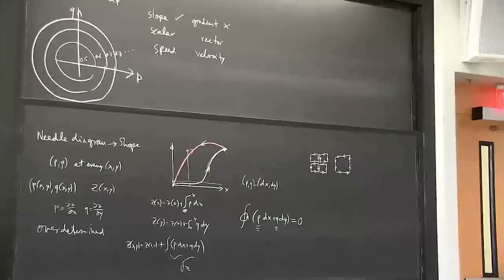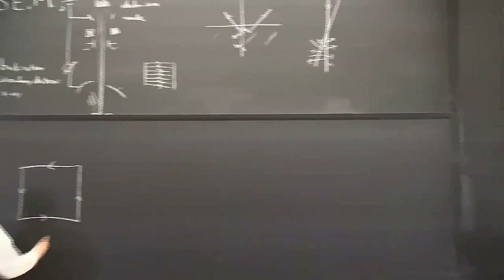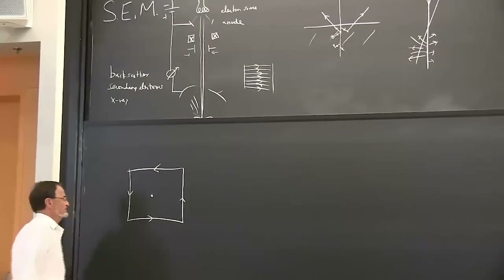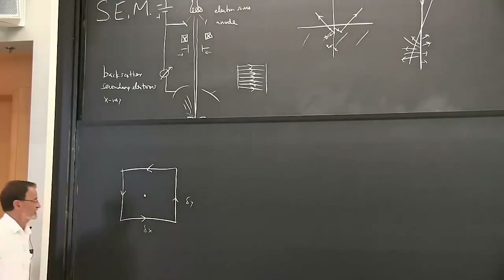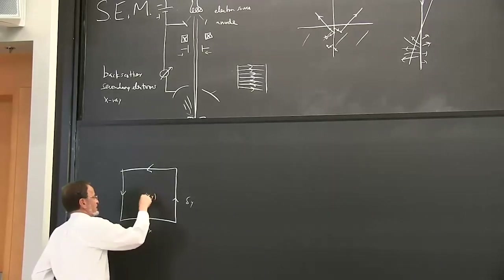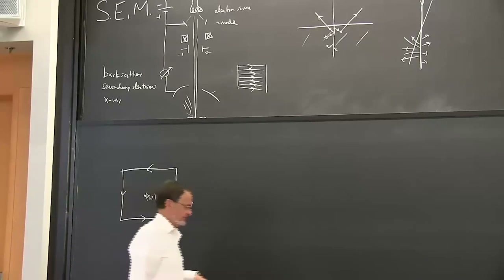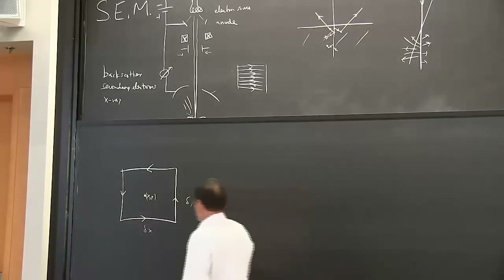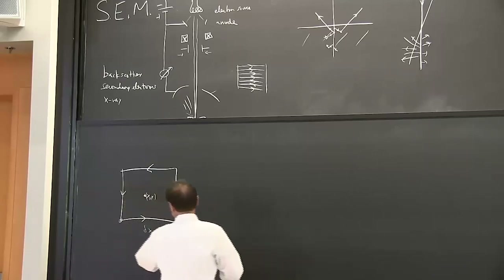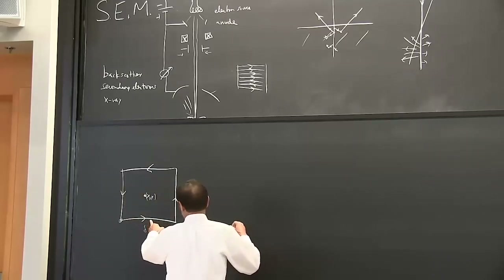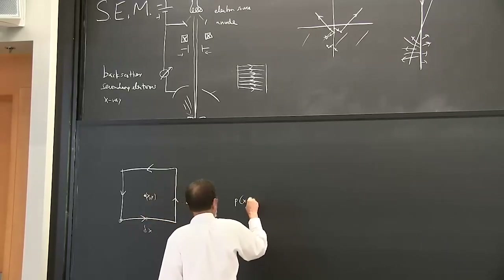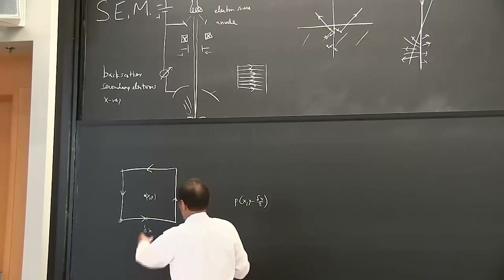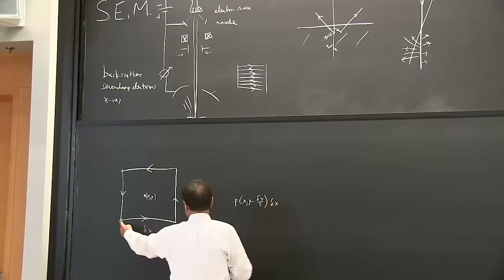Let's have a small loop of size delta_x in this direction and delta_y in that direction, and let's see how the height changes as we go around this loop. Starting down here, we need the slope in the x-direction, which is P, and we take the slope at the center of this stretch - P of x and y minus delta_y/2. That's the slope and we're going delta_x with that slope, making the loop small enough so we can use the linear approximation that the slope is pretty much constant over that stretch. Then we go up - we need the slope in the y-direction, which is Q.